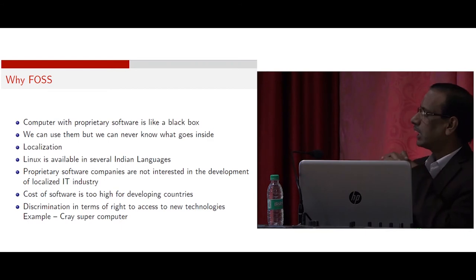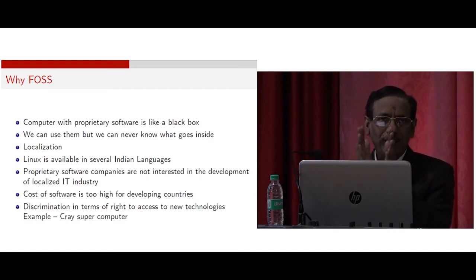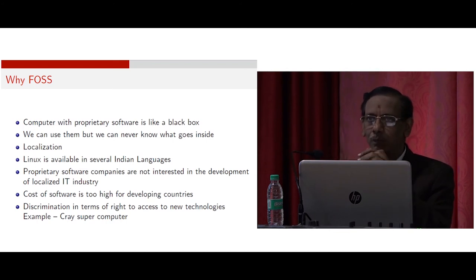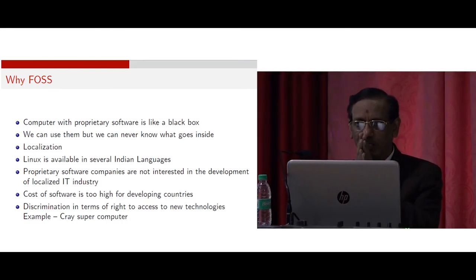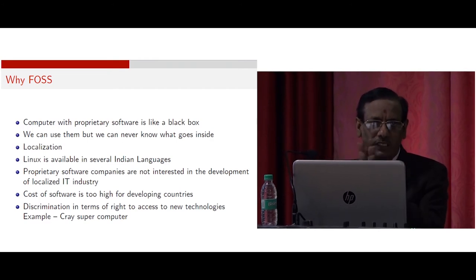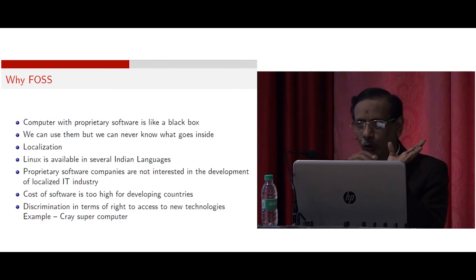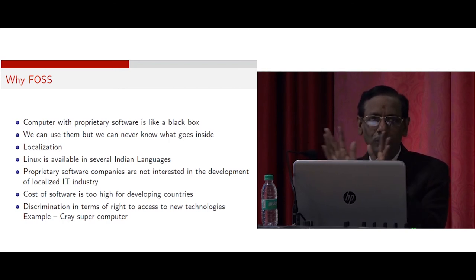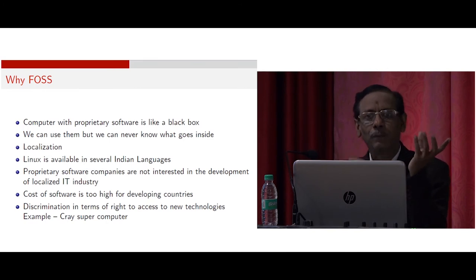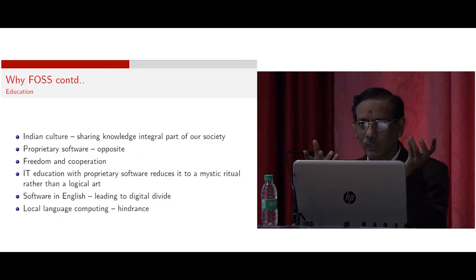There is also discrimination in terms of access. Once upon a time, India wanted to purchase a Cray supercomputer around 1985, during Rajiv Gandhi's time. But America, which produces Cray computers, said they won't sell it to India. India wanted it for weather forecasting, but America said India runs nuclear power plants and may use the computer for producing nuclear weapons — therefore they refused. So at that time, Rajiv Gandhi's government created CDAC, the Center for Development of Advanced Computing in Pune, and India itself started creating and selling Param supercomputers. There are so many supercomputers India is now producing.